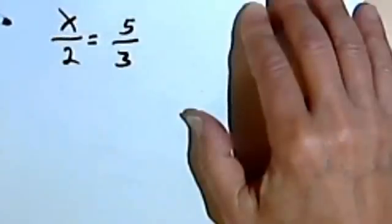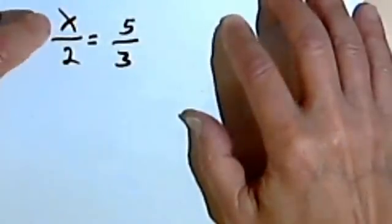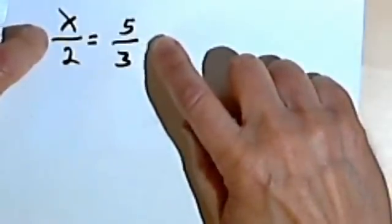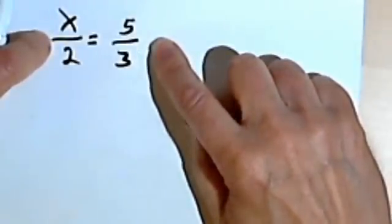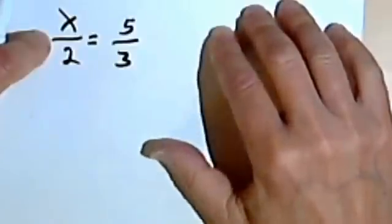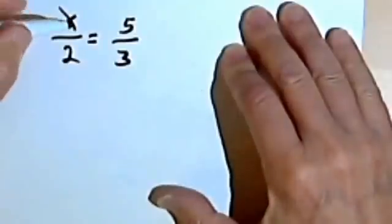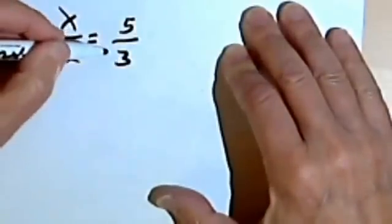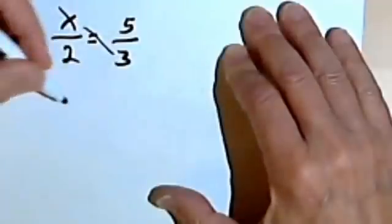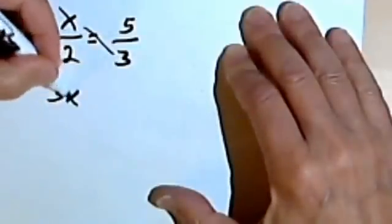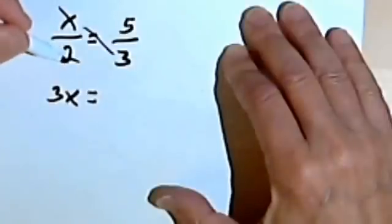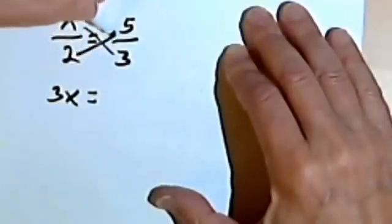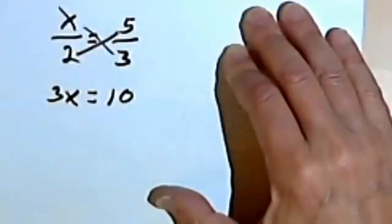A lot of students cross-multiply any time they see two fractions. To cross-multiply, you've got to have an equation, first of all, and both sides have to be fractions. If that's the case, you can multiply the numerator on the left side by the denominator on the right side. So I'm going to multiply these two, and that will give me 3x. And you can multiply the denominator on the left by the numerator on the right, so I'm going to multiply 2 times 5, and that will give me a 10.